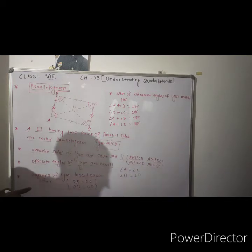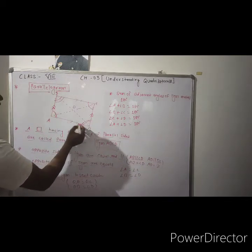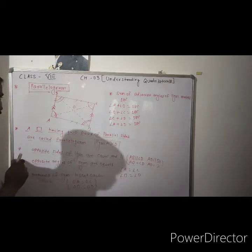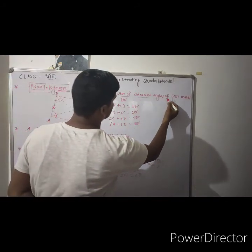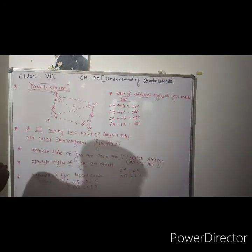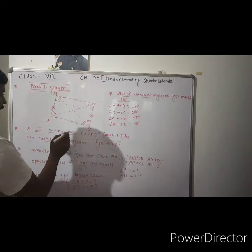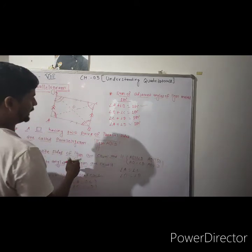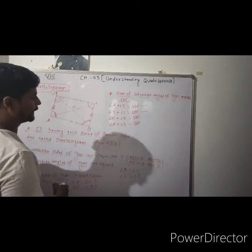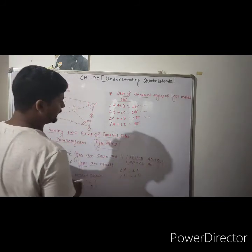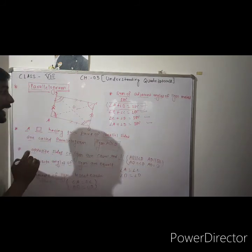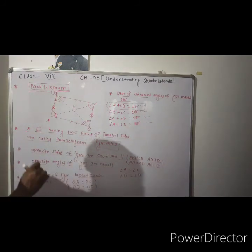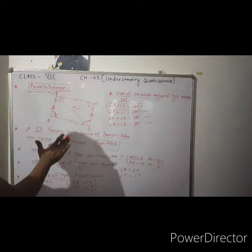One more important property of a parallelogram: angle A and angle B are adjacent angles; angle B and angle C are adjacent angles; angle C and angle D are adjacent angles; and angle D and angle A are adjacent angles. The sum of adjacent angles of a parallelogram always makes 180 degrees. So we can write: angle A + angle B = 180°, angle B + angle C = 180°, angle C + angle D = 180°, and angle A + angle D = 180°.